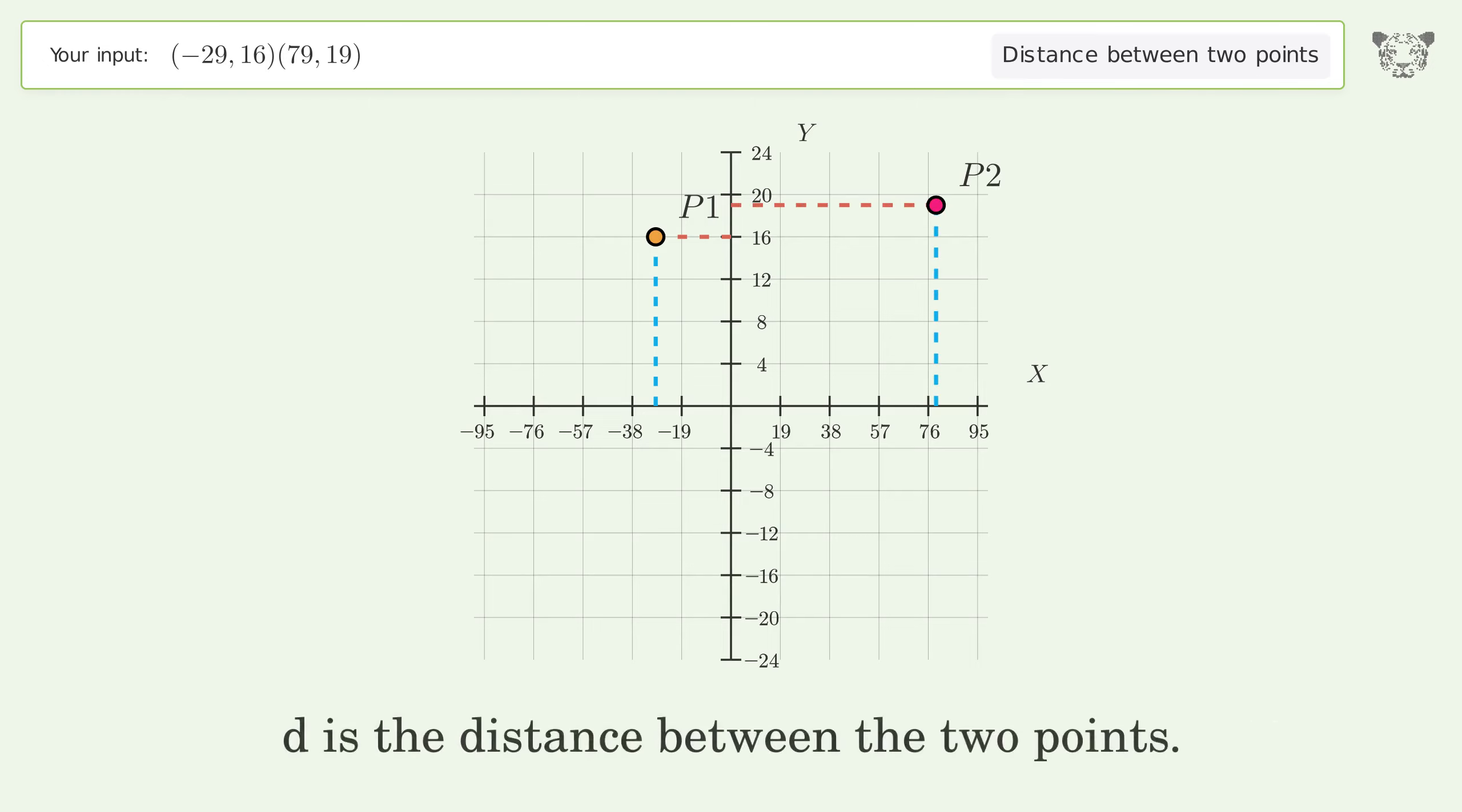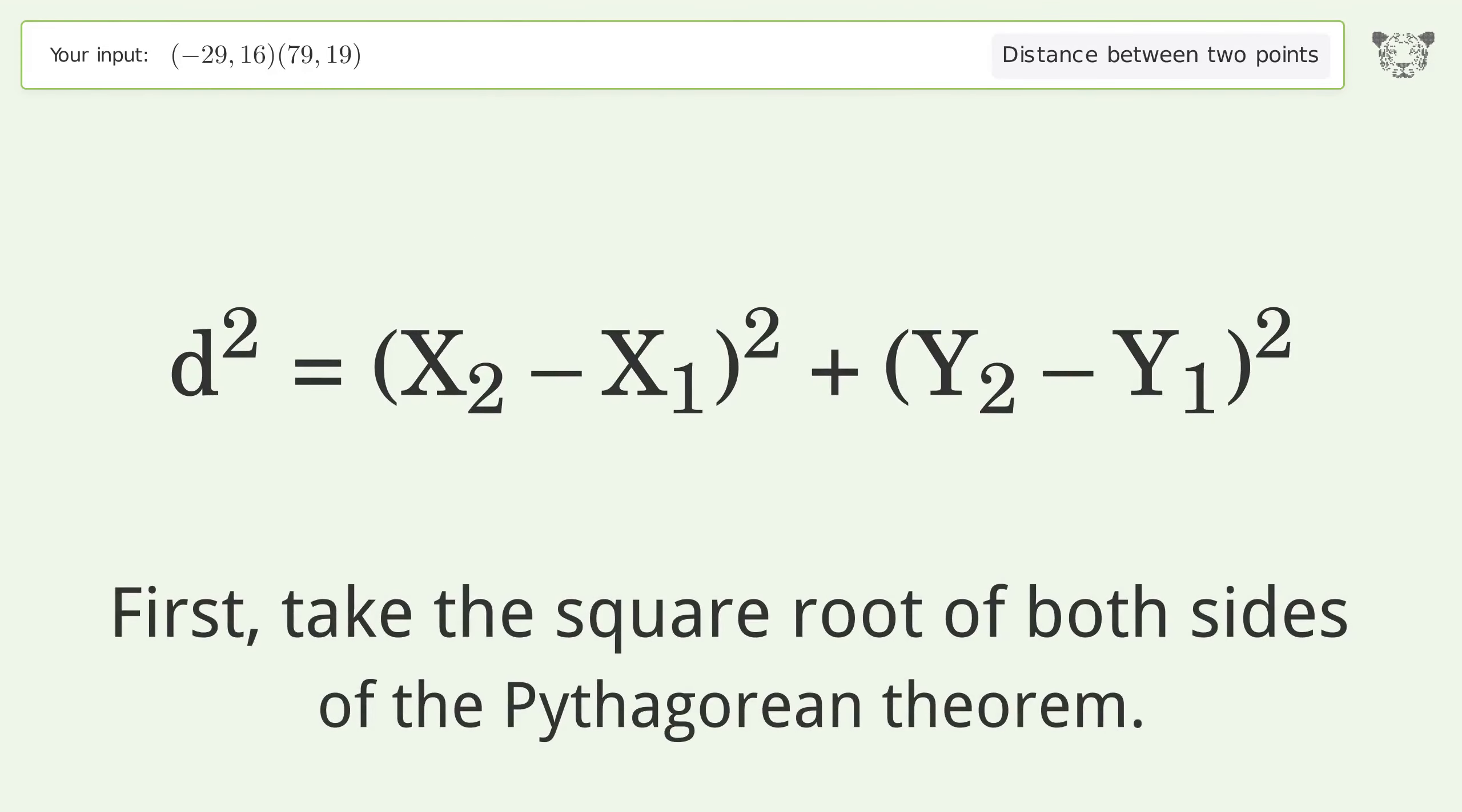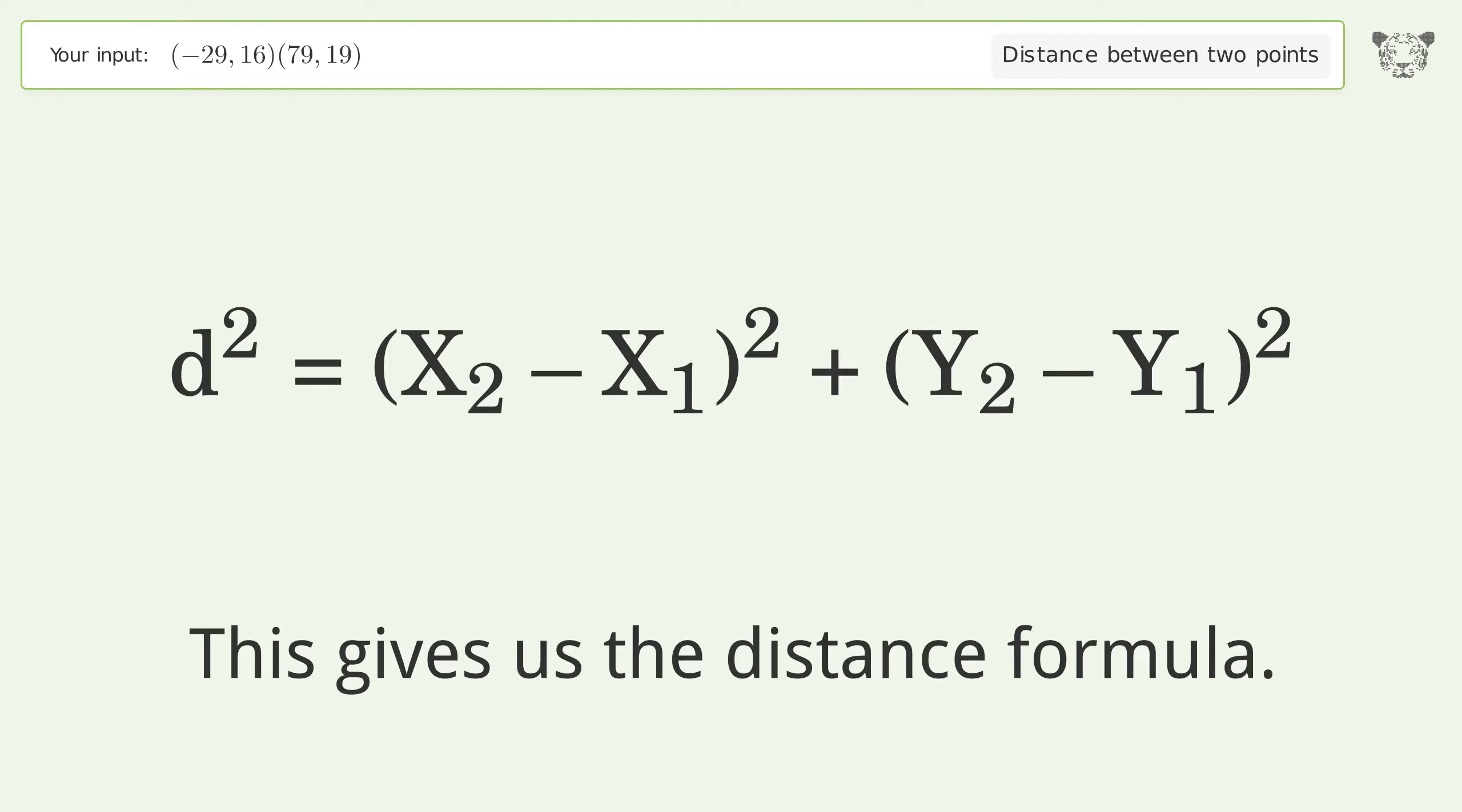d is the distance between the two points. First, take the square root of both sides of the Pythagorean theorem. This gives us the distance formula.